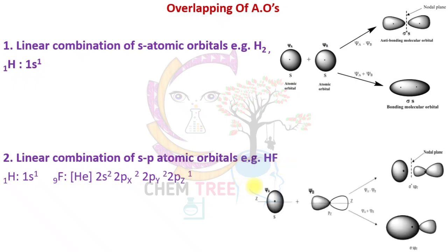An example of sp overlap is the hydrogen fluoride (HF) molecule. In HF, the hydrogen electronic configuration is 1s¹. The fluorine p orbital contains one unpaired electron, which pairs up with the hydrogen atom to form the HF molecule. The 1s overlaps with 2pz, forming sigma and sigma star bonding and anti-bonding molecular orbitals. If the lobes have the same sign (plus-plus), a bonding molecular orbital is formed.